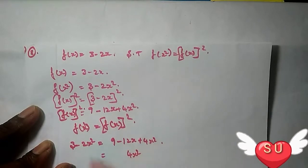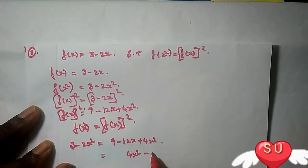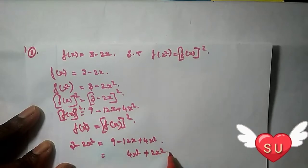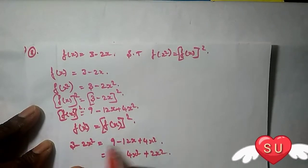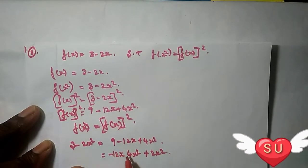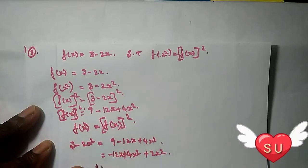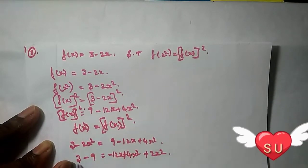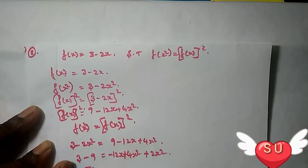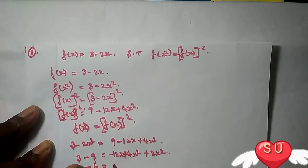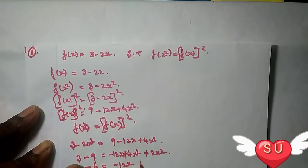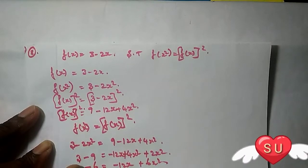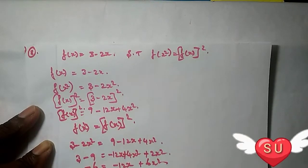Rearranging: bringing all terms to one side, we get 4x² plus 2x² minus 12x plus 2Lx plus 9 minus 3 equals 0, which simplifies to 6x² minus 2Lx plus 6 equals 0.